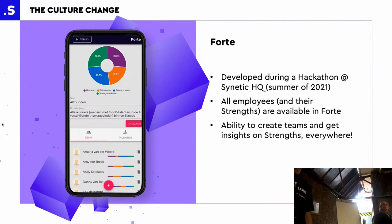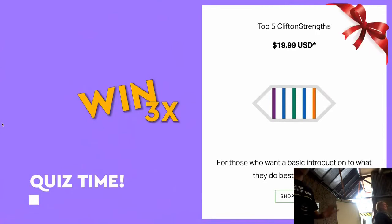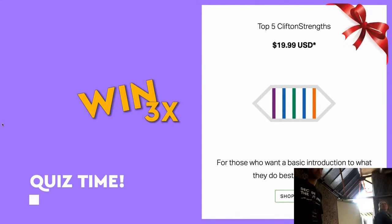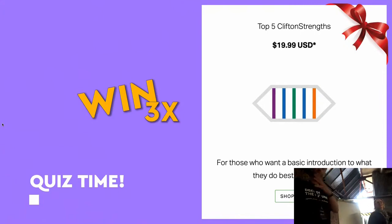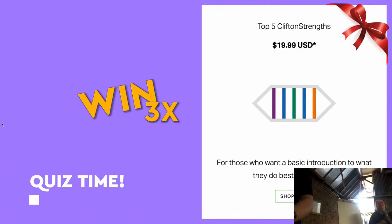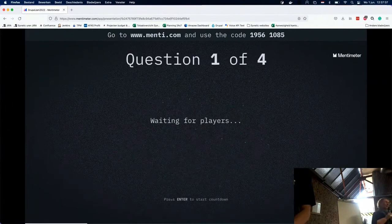Is everyone in the menti? Then we're going to start with the first question. How many talents are there? There you go, go quickly! Five seconds left. Everyone's voted. The right answer is 34. Most people got it. Let's see who was the fastest — Jesper is the fastest! You were fast.